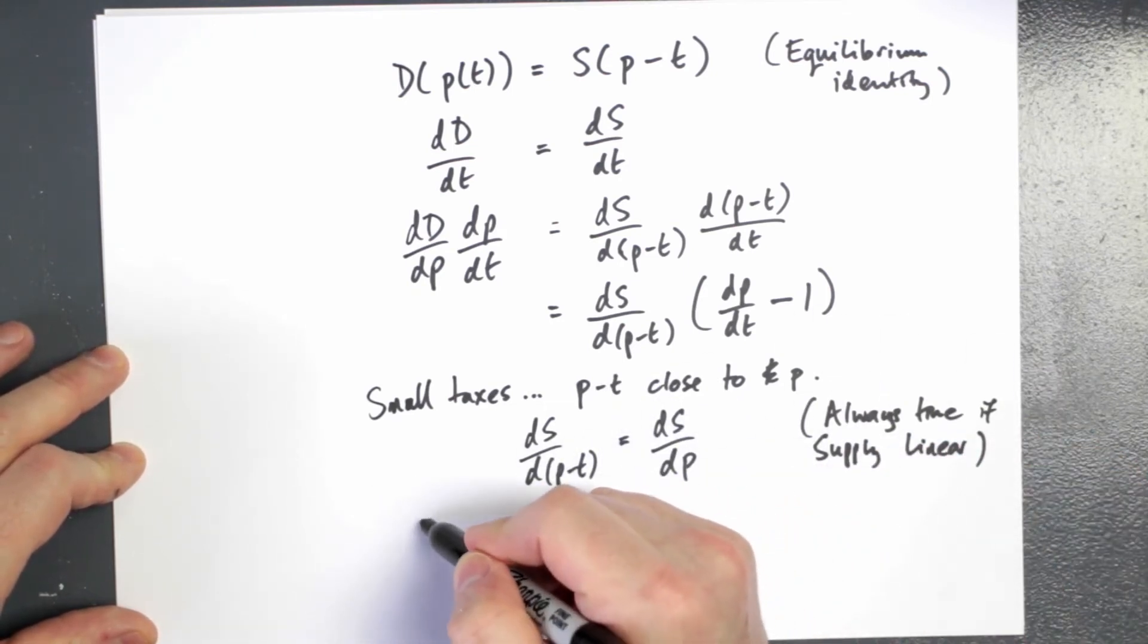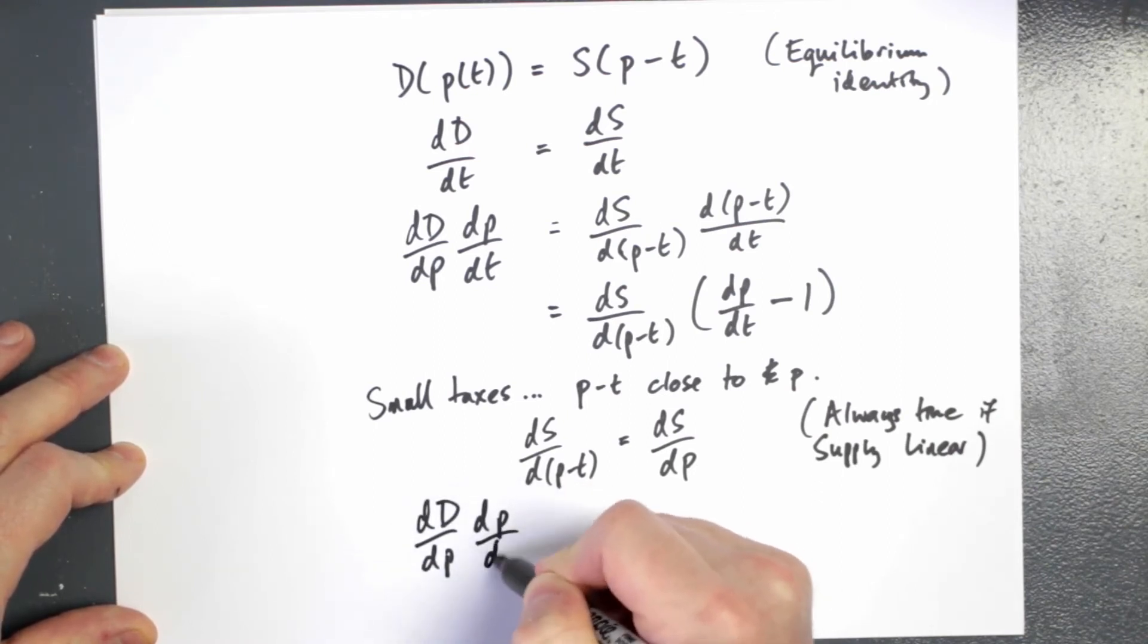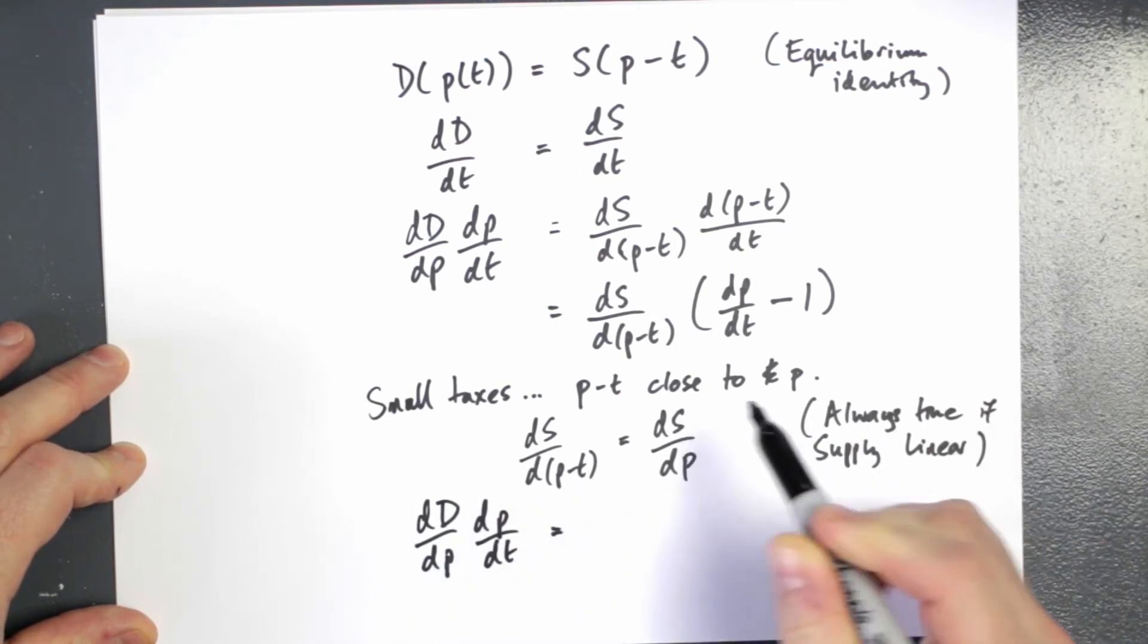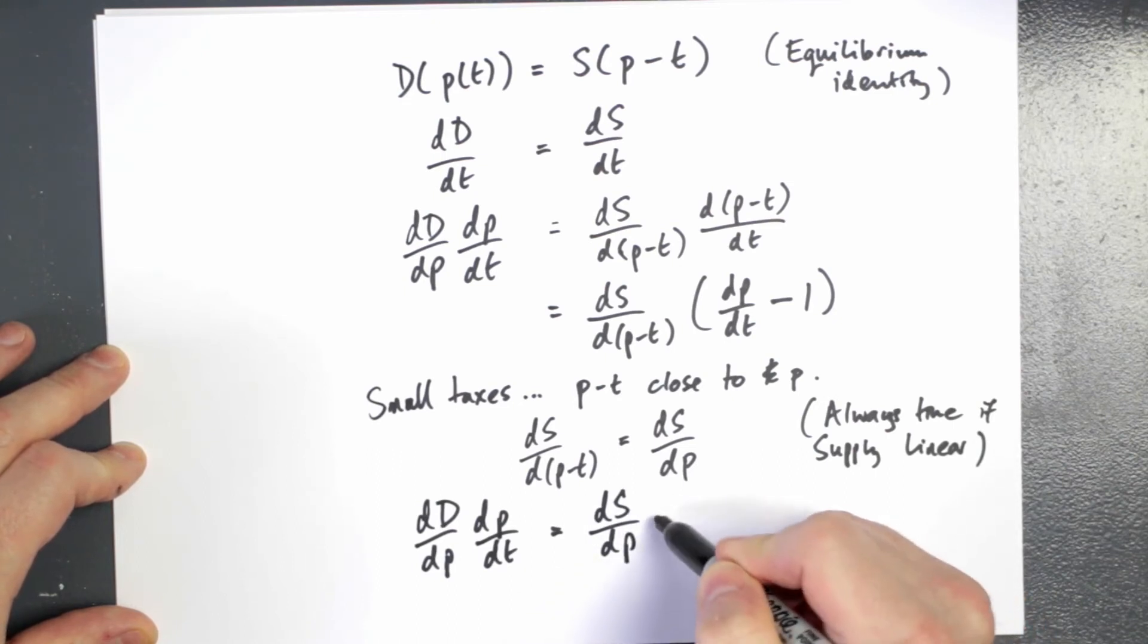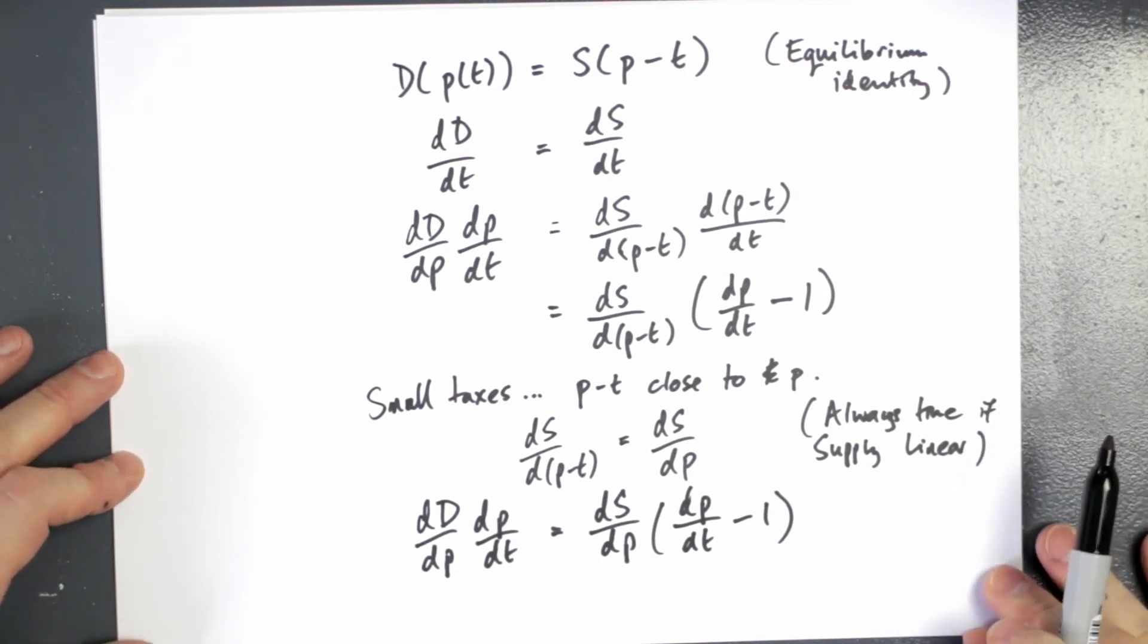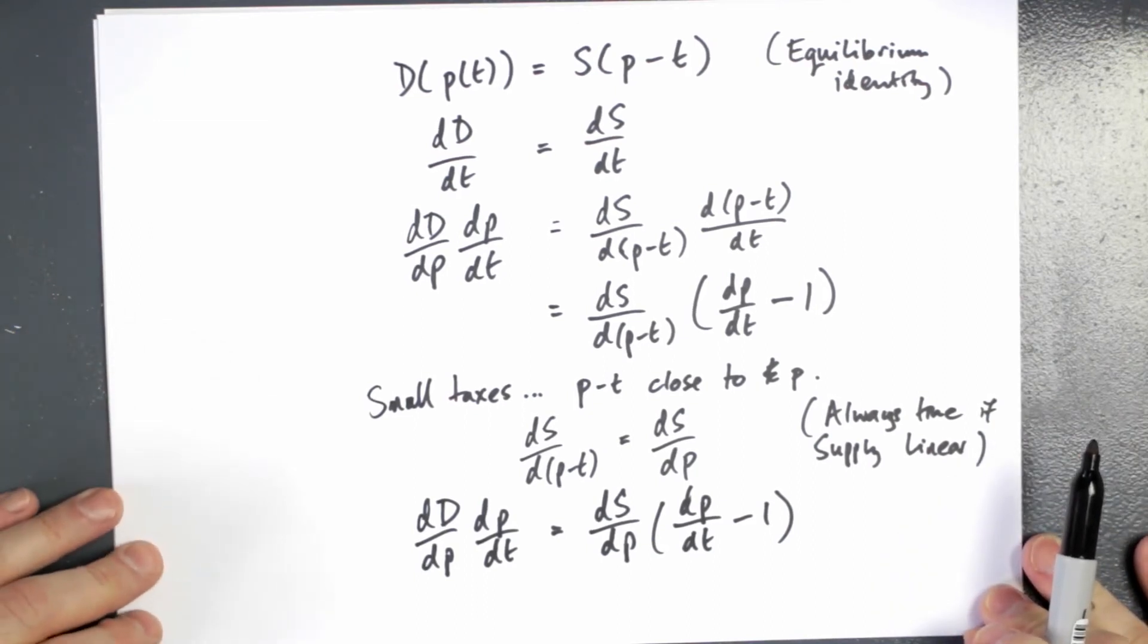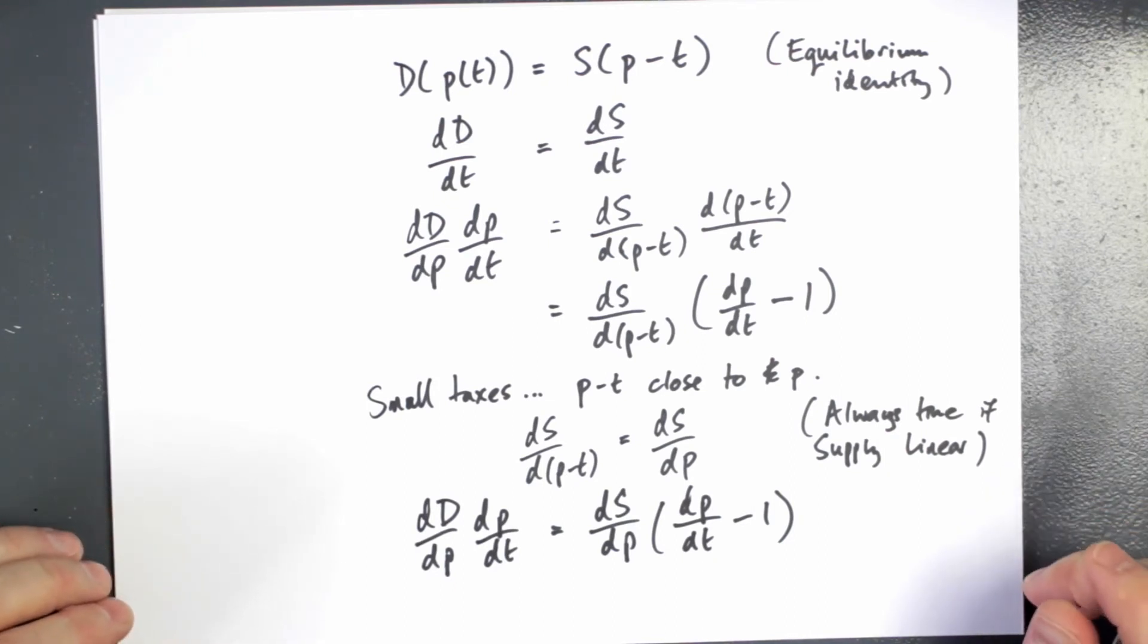In which case we can rewrite our equation: the derivative of demand with respect to price multiplied by the derivative of price with respect to tax is equal to, and then I'm going to replace this term here with the derivative of supply with respect to price minus one. So this is an approximate equation. That's a very good approximation when the tax is small or if supply is linear, then it's exactly true.